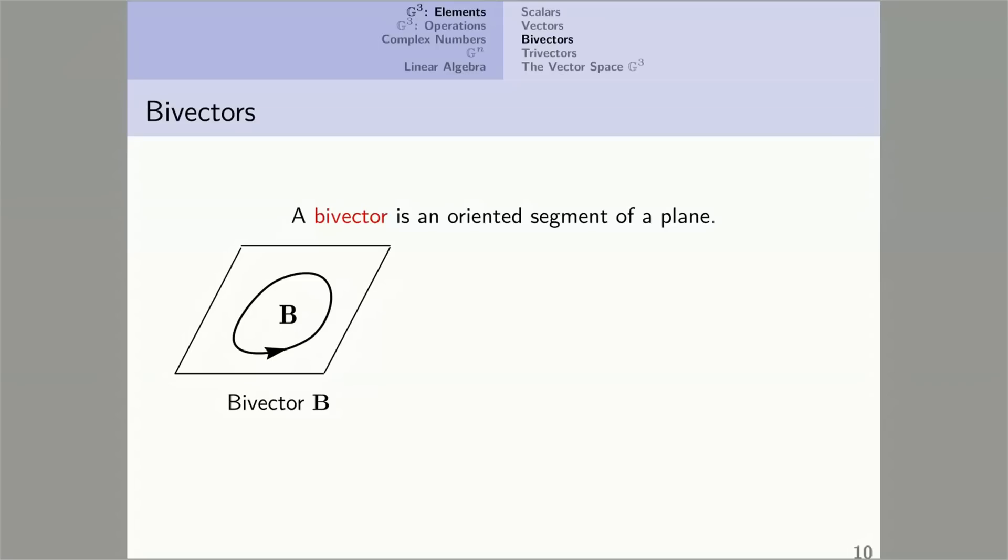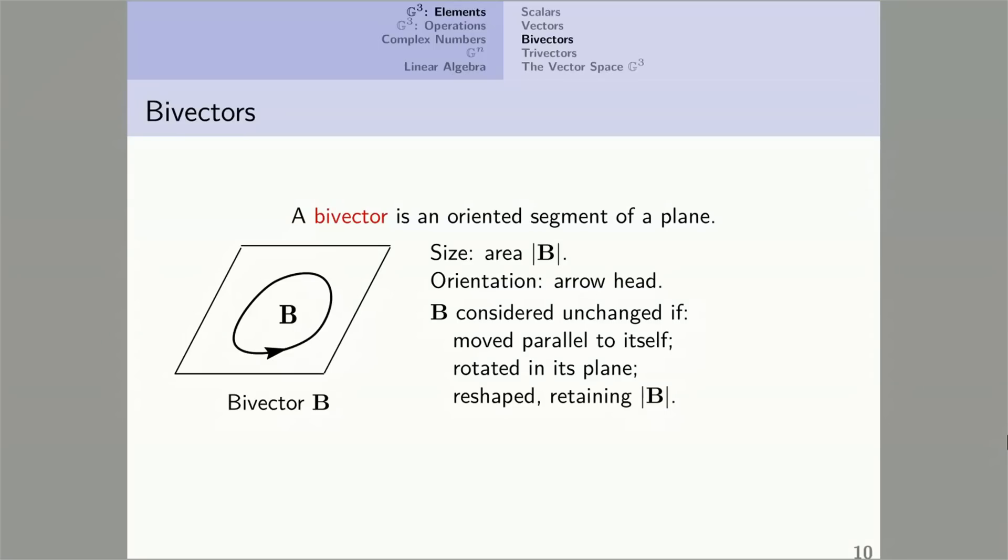Bivectors. A bivector is an oriented segment of a plane. I've indicated the plane in the diagram with a parallelogram and placed the bivector B in it. A bivector has a size, its area, and an orientation given by an arrowhead around the boundary. The arrowhead gives the bivector a counterclockwise orientation. In the figure, flipping the arrow would give it a clockwise orientation. The bivector is considered unchanged if it's moved parallel to itself, rotated in its plane, or even reshaped as long as the area is retained.